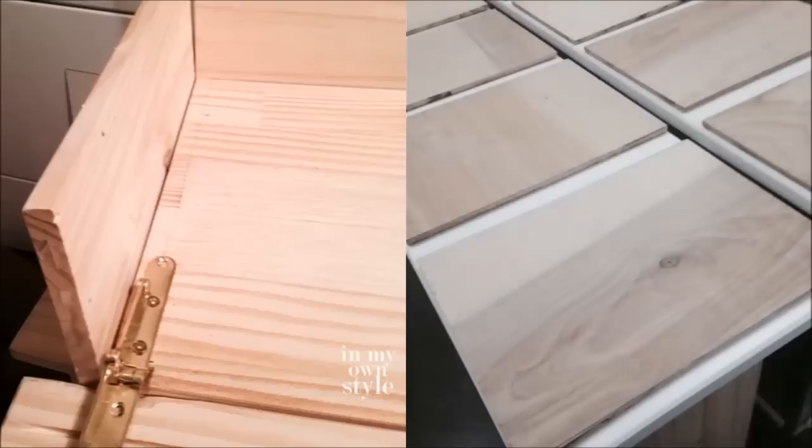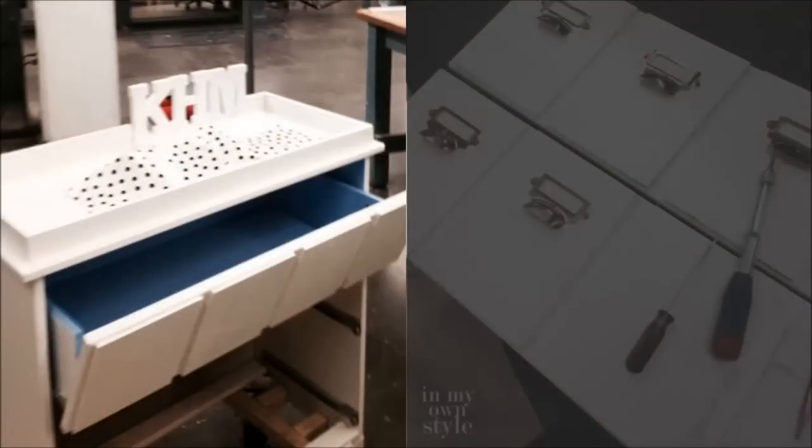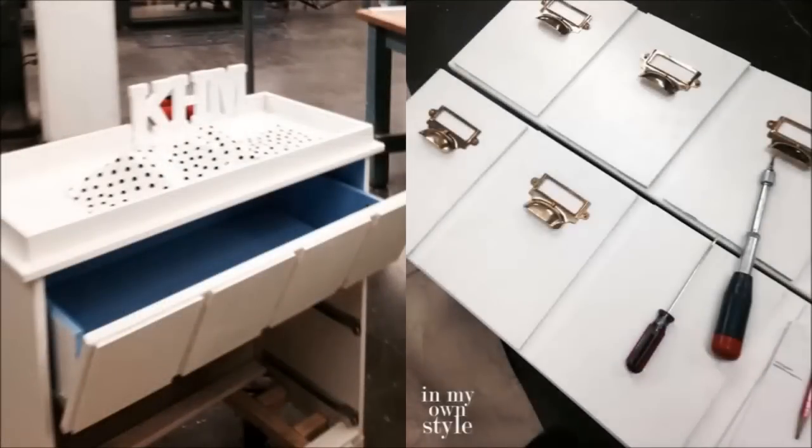For the drawer front, place four of the quarter-inch birch plywood pieces on each drawer. Use liquid nails to attach. Prime and paint them before or after attaching. Attach the pull, and you're done!